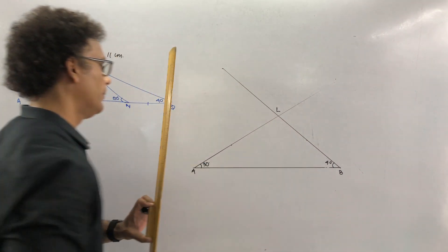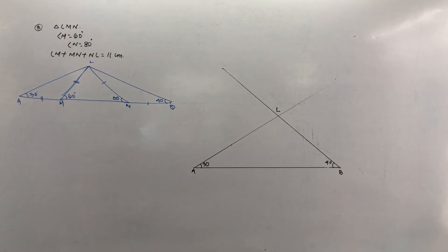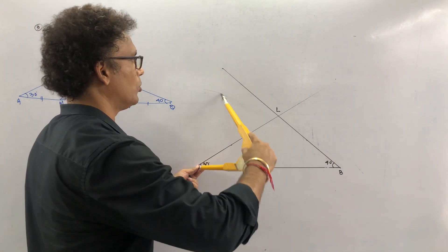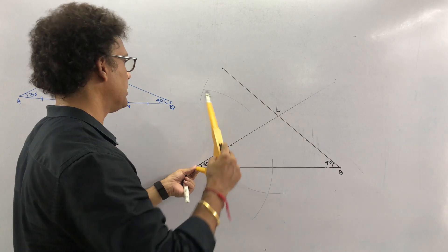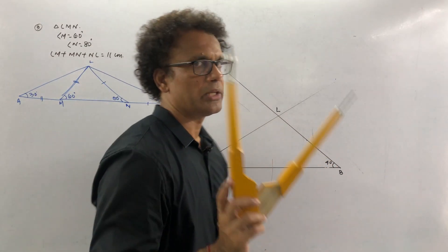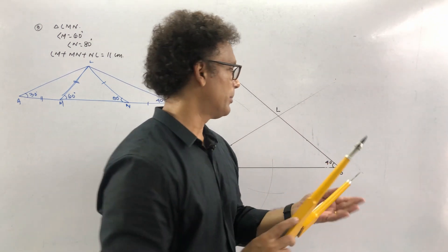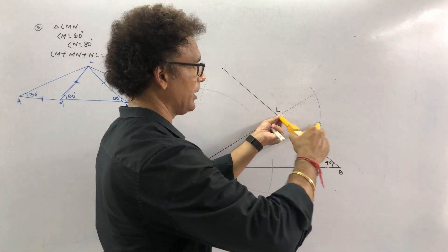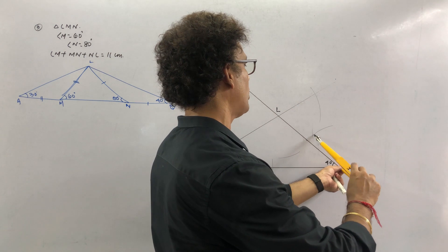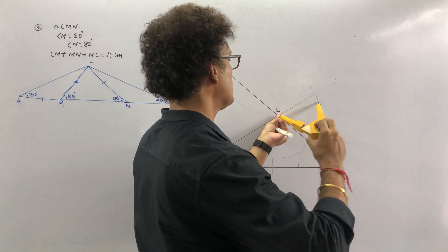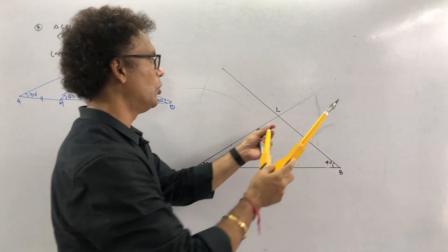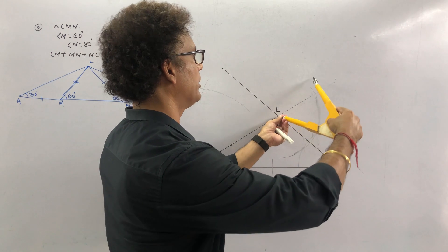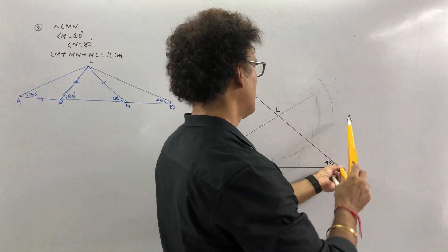This is your point L. Now first bisect LA and then bisect LB. Keep your compass at each point, draw arcs above and below. The teacher reminds students to hold the compass more than half — if you hold less than half, the arcs will not meet. That is why always hold more than half.